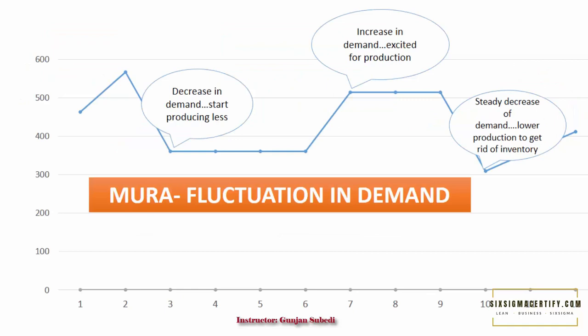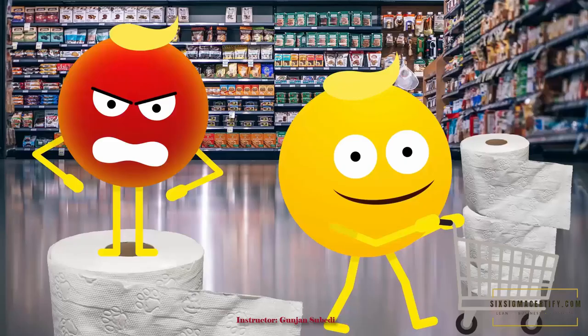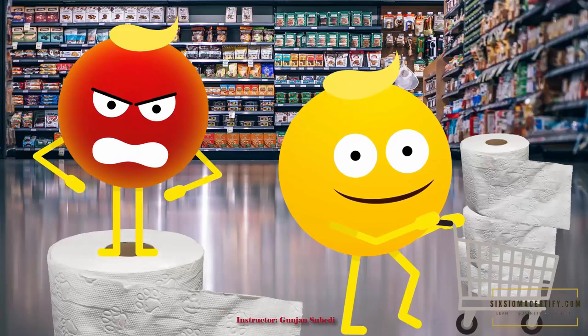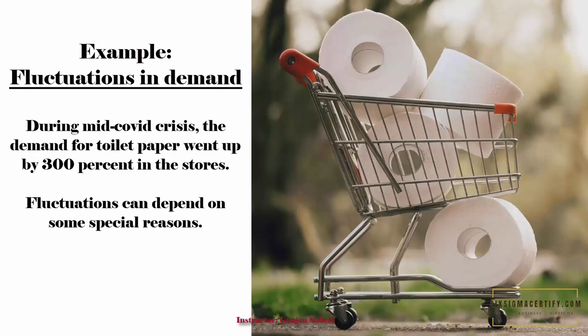Similarly, there could be fluctuations in the demand of the product. Sometimes the demand is less and sometimes the demand is more. Fluctuation in demand depends on different seasons and customers' preferences, and there could be different reasons for the fluctuations. During the mid-COVID crisis, the demand for toilet papers went up by 300% in stores. So these fluctuations can depend on some special reasons or occasions also.